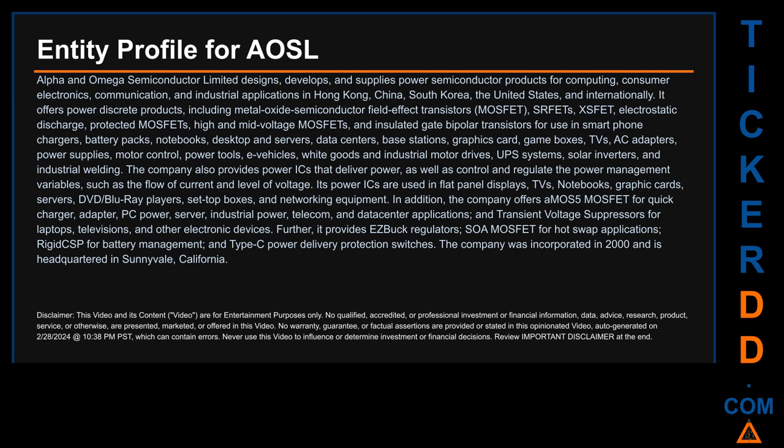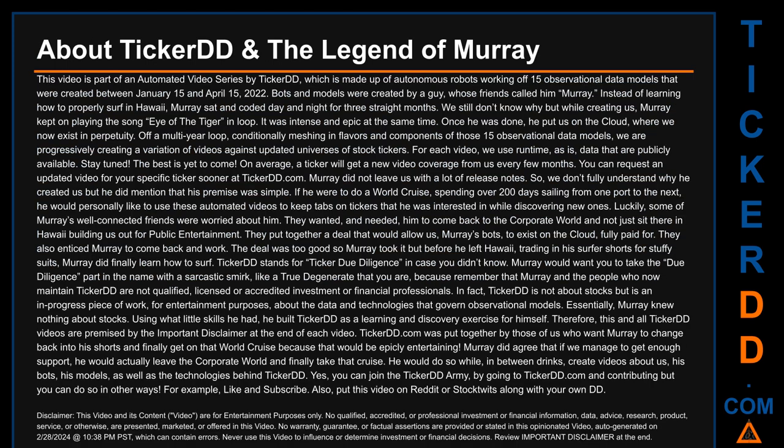The company also provides power ICs that deliver, control, and regulate power management variables such as the flow of current and level of voltage. Its power ICs are used in flat panel displays, TVs, notebooks, graphic cards, servers, DVD/Blu-ray players, set-top boxes, and networking equipment. Additionally, the company offers AMOS-5 MOSFETs for quick charger, adapter, PC power, server, industrial power, telecom, and data center applications; transient voltage suppressors; easy buck regulators; SOA MOSFETs for hot swap applications; rigid CSP for battery management; and Type-C power delivery protection switches. The company was incorporated in 2000 and is headquartered in Sunnyvale, California.